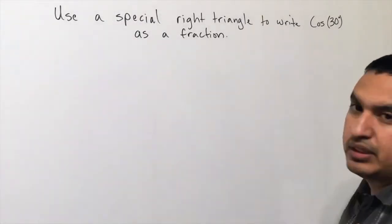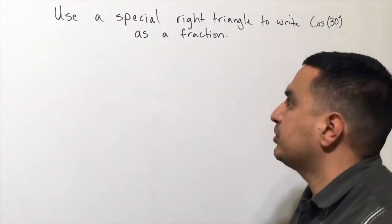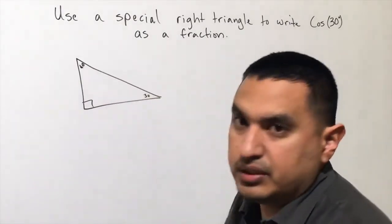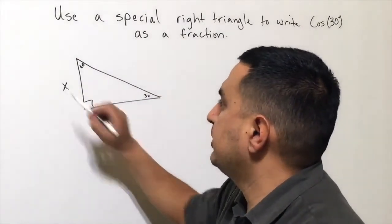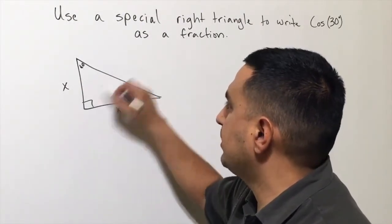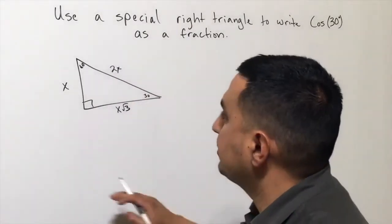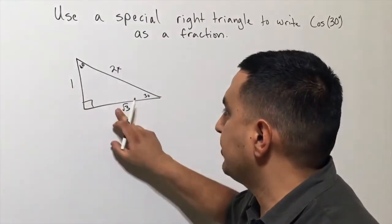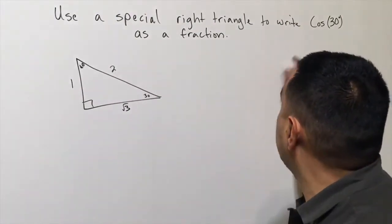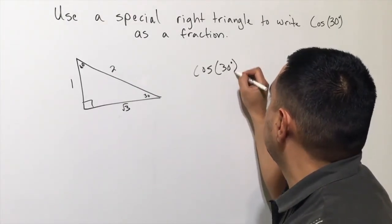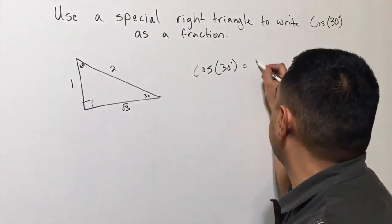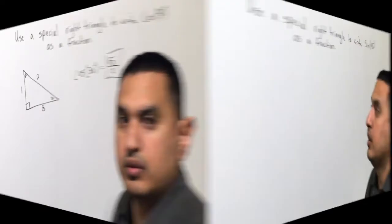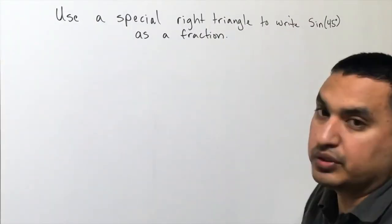Now let's find cosine of 30 degrees using a special right triangle. Drawing a 30-60-90 triangle: the smallest side is x, the side across from 60° is x√3, and the hypotenuse is 2x. Setting x = 1 simplifies this to sides 1, √3, and 2. Cosine of 30° is the adjacent leg over the hypotenuse, which is √3 over 2.